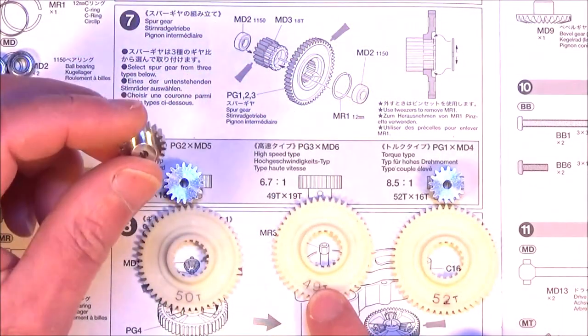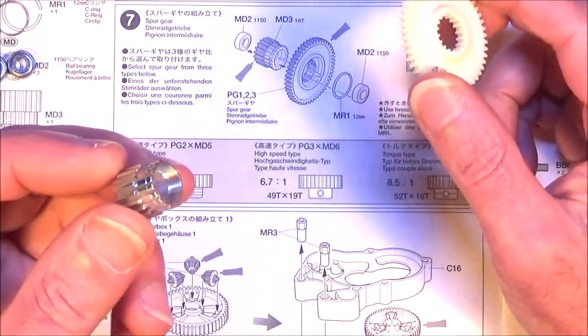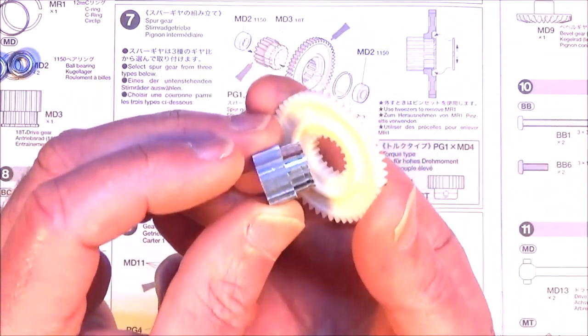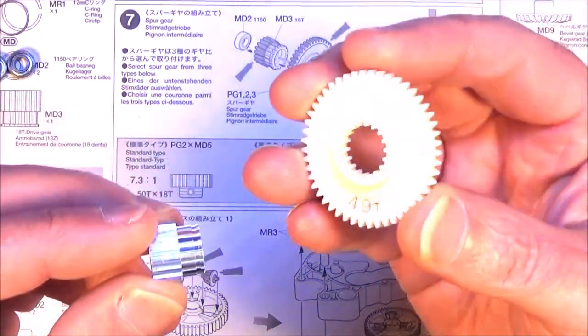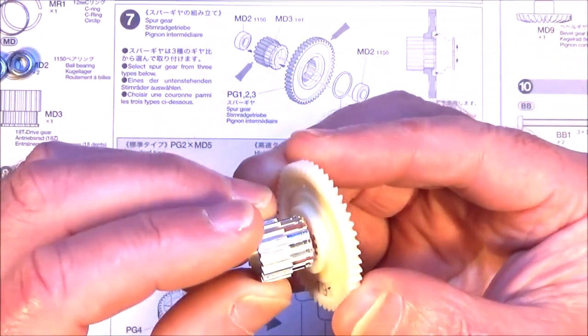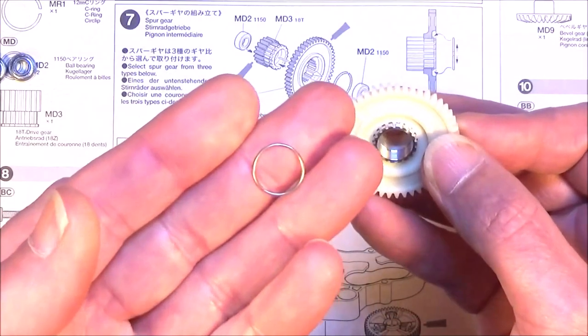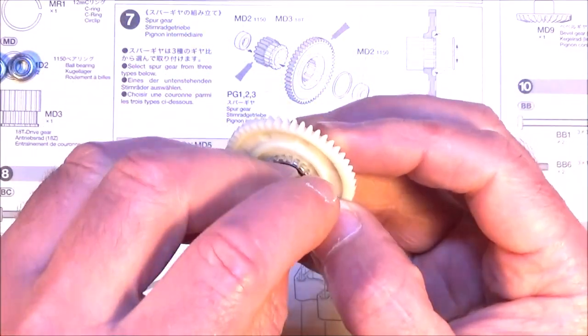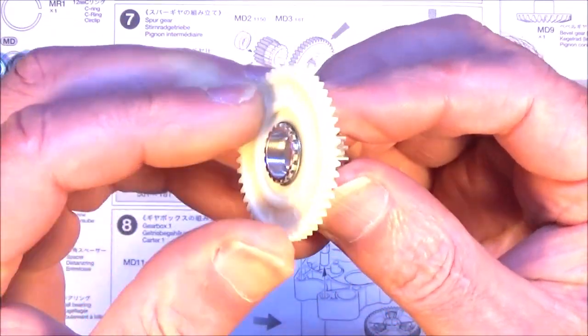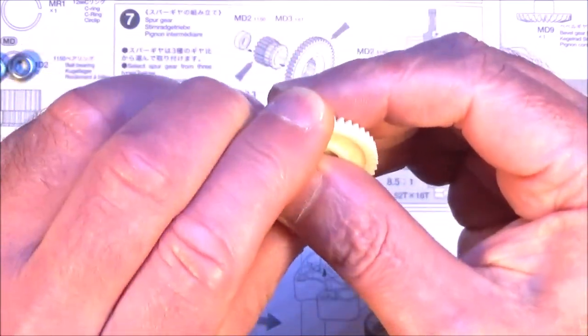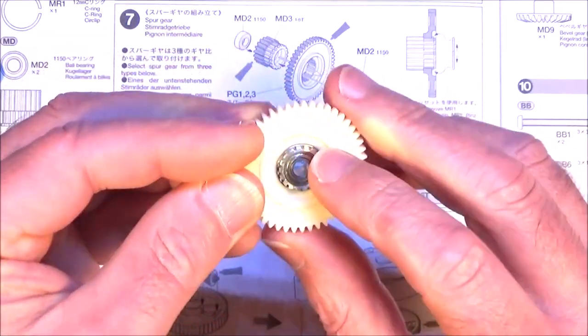I've gone for the biggest pinion and the smallest spur which is 49 teeth. So for this step all we need to do is get aluminium part MD3 which is a gear and that's got to go through your chosen spur gear.